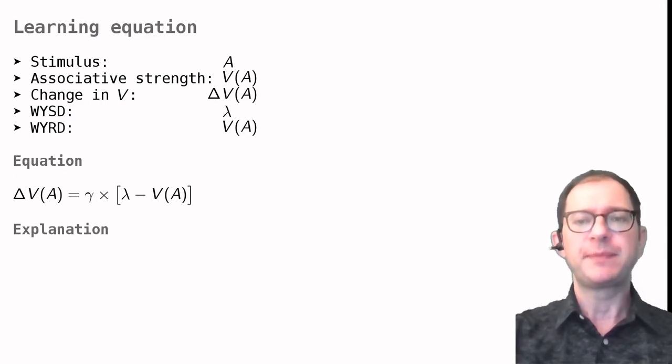The symbols are assembled into the learning equation like this. The first term is delta V, the change in associative strength. This is equal to the error lambda minus V, that is, WYSD minus WYRD, times the factor gamma. Here is what this means.